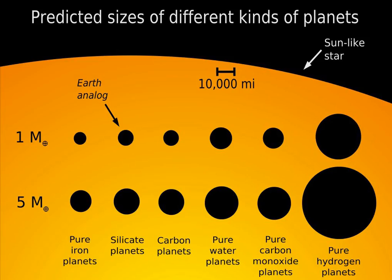Iron-rich planets are smaller and more dense than other types of planets of comparable mass. Such planets would have no plate tectonics or strong magnetic field as they cool rapidly after formation.